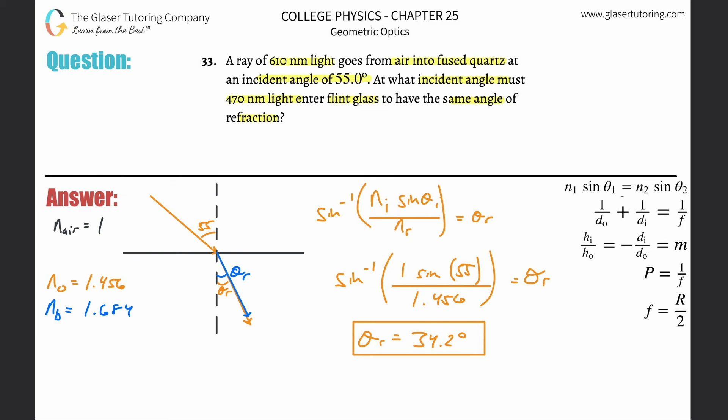Now, this is the refracted angle for the orange light. But now they're saying, what happens when this angle of refraction is the same for the blue light in a different medium? Pretend this is not fused quartz anymore. Pretend this medium is flint glass. It's still air at the top, so we got this blue ray. What we need to figure out is this new angle of incidence. Down here we need the value for flint glass. The refracted ray's angle, theta sub r, is going to be the same thing for the blue.